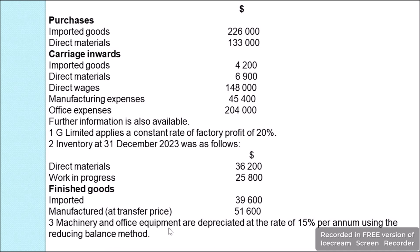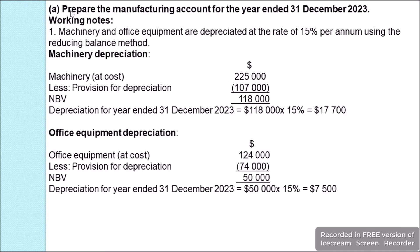Machinery and office equipment are depreciated at the rate of 15% per annum using the reducing balance method. In part (a) of the question we are asked to prepare the manufacturing account for the year ended 31 December 2023.